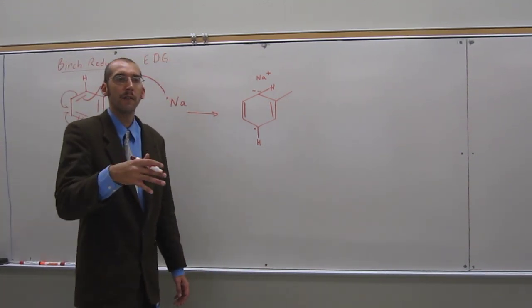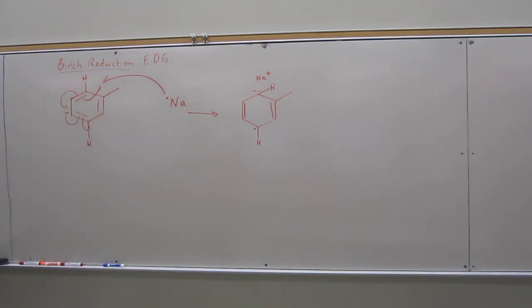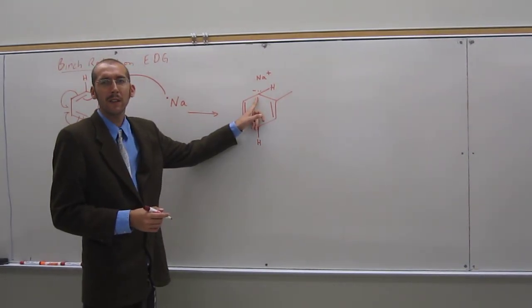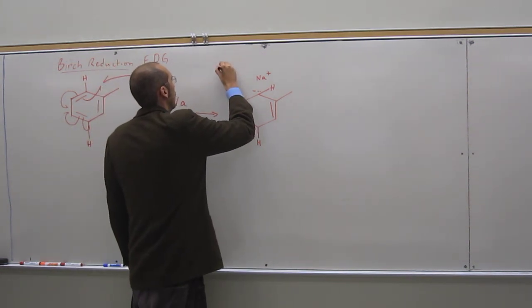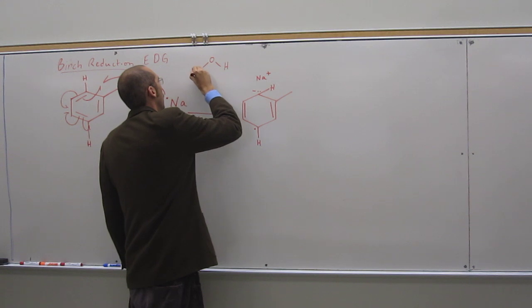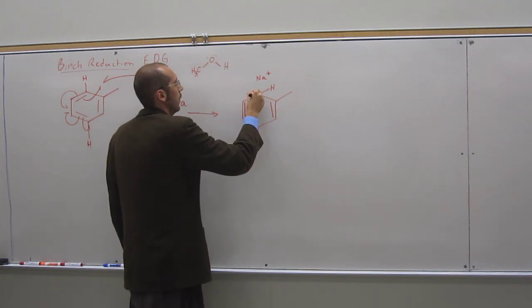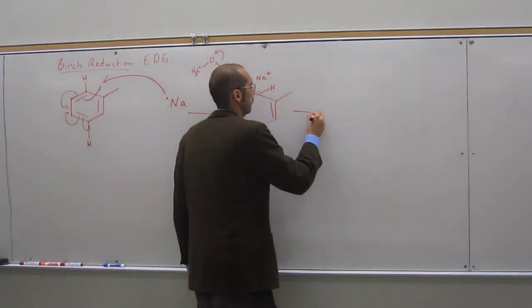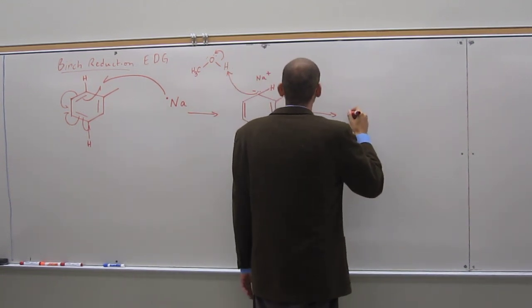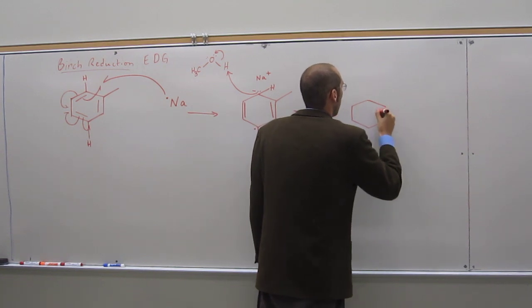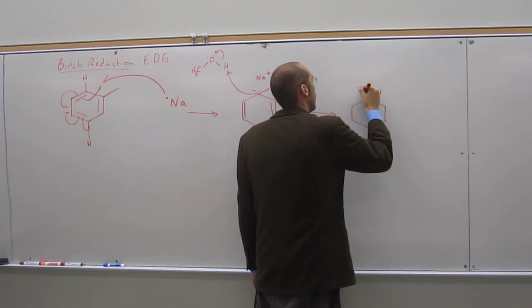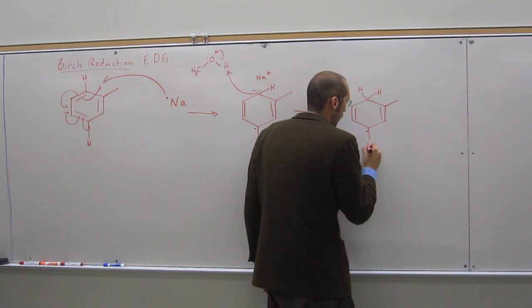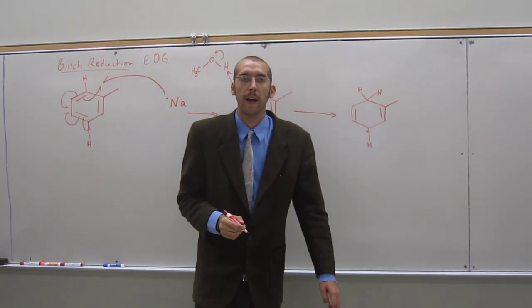So now we've got the solvent in there, which is in this case methanol. Methanol's got an acidic proton, especially when you've got a carbanion. So we're going to remove that proton like that. And when we do that, we make that carbon very happy. But this carbon still is a radical.